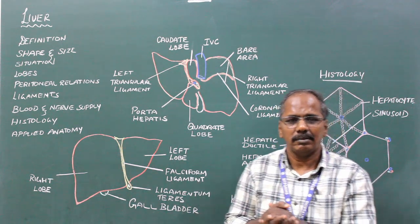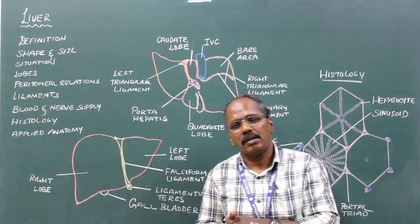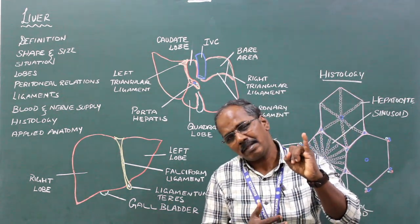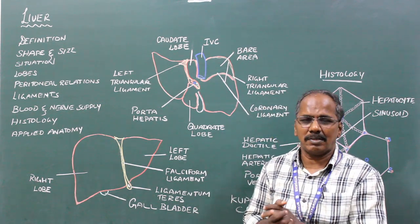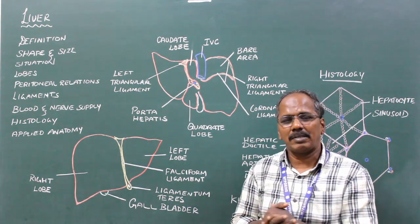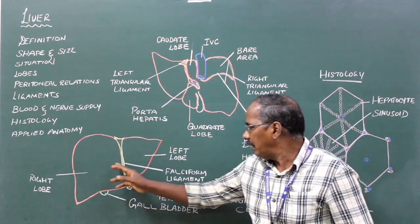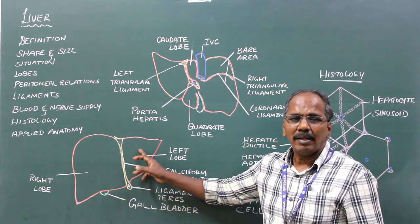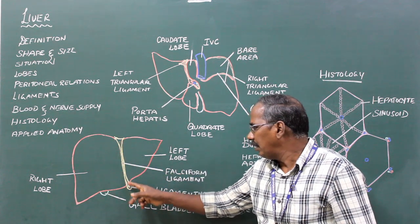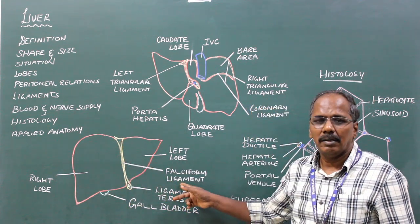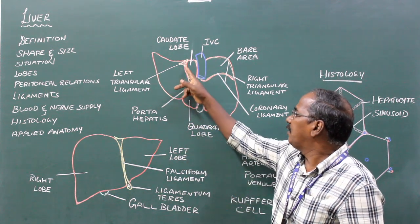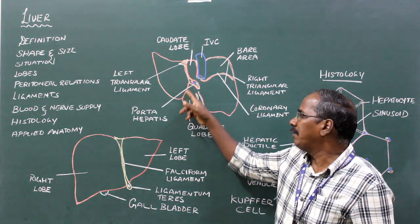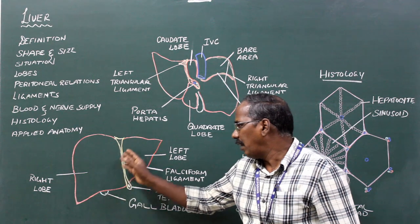Lobes. The lobes of the liver are classified into two types: number one, anatomical lobes; number two, functional lobes. Anatomical lobes: anatomically it consists of two lobes — right lobe and left lobe — divided anteriorly by the falciform ligament and posteriorly by the fissure for ligamentum venosum and fissure for ligamentum teres.